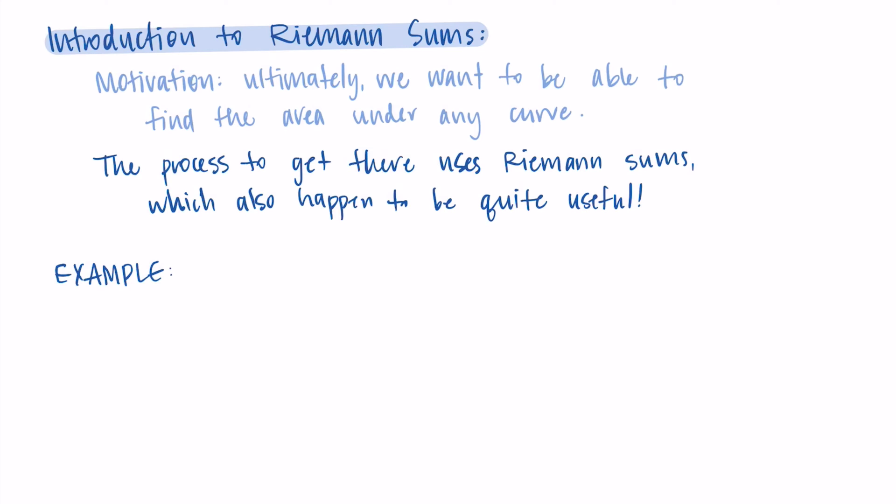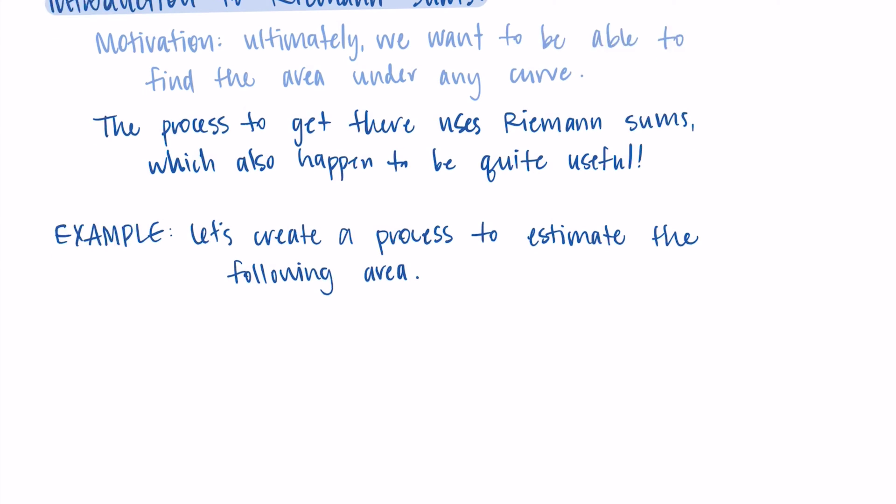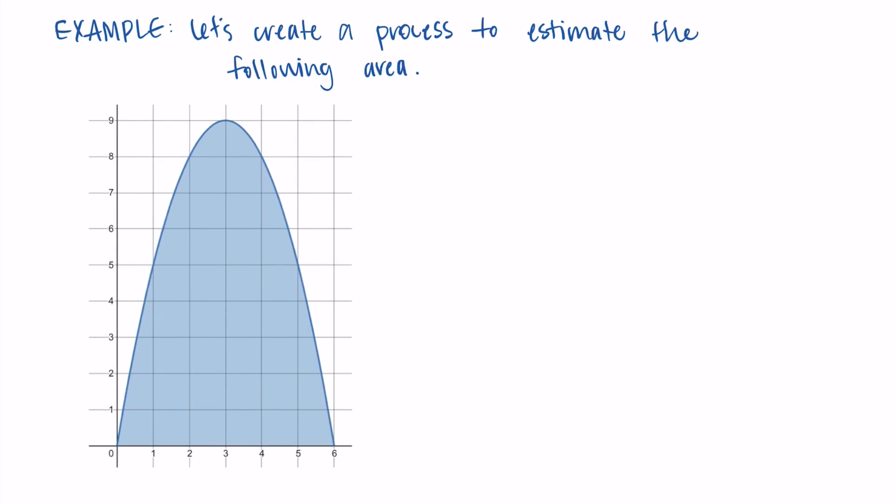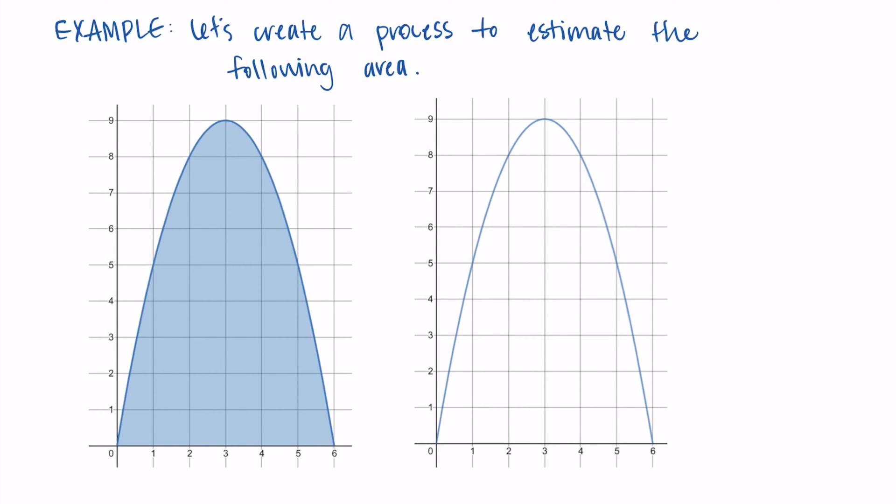So to show you what this looks like, let's create a process to estimate the following area. Specifically, I want to look at this parabola that is facing downward, and let's find a process to estimate the area. So if you wanted to know the area under this curve, one way to do it would be to basically just count the boxes. And the way we're going to count the boxes is by making rectangles. So we're going to make a bunch of rectangles that have certain heights that fill up this space. So you're going to see this isn't exactly the area, but we're approximating, we're doing our best to get the area.